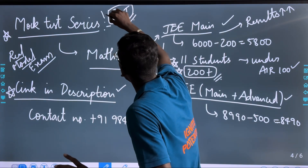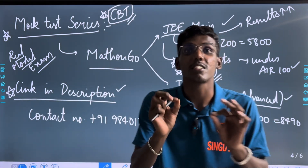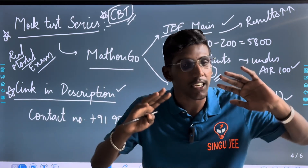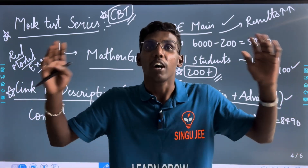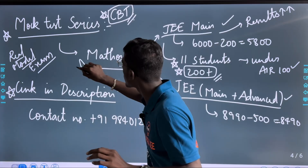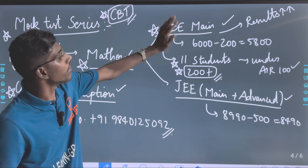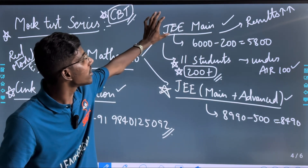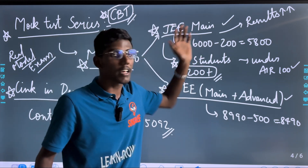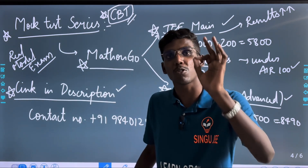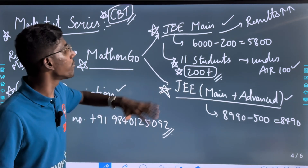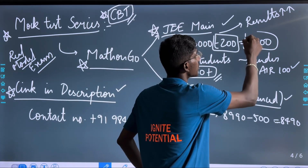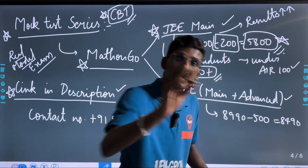The mock test series should start from August and must be done in CBT mode — real-world examination mode, like a real JEE Main examination. You can find the math and go terrain mock series. This is the main test series, the JEE Main and Advanced series. You can get it for 1 year. It costs around 6,000 rupees — there is a link in the description with a discount coupon code applied.